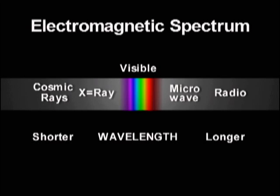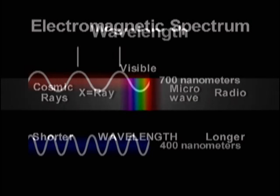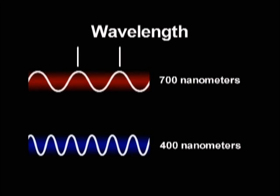All electromagnetic waves move at the speed of light, which is approximately 299,000 kilometers per second. The difference lies in the distance between the crests of individual waves, known as wavelength.